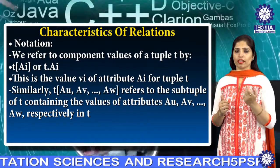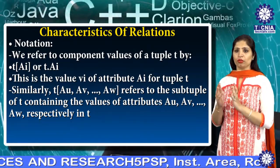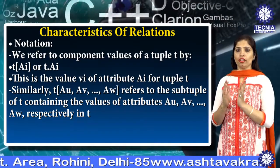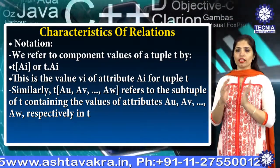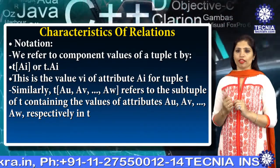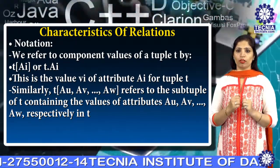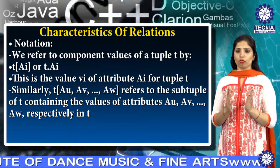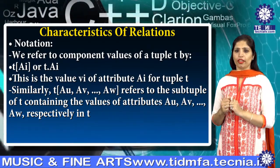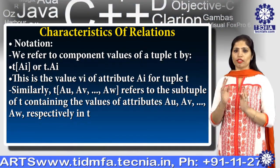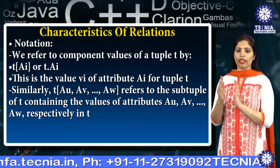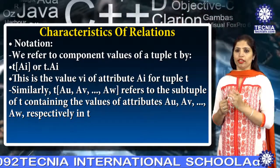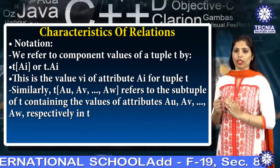The next characteristic is notation. We refer to the component values of a tuple t by t[Ai] or t.Ai, which is the value Vi of attribute Ai for the tuple t. Similarly, t[A1, A2, ..., AN] refers to a sub-tuple of t containing the values of attributes A1 through AN respectively in a particular tuple.